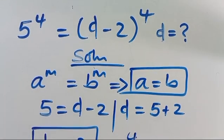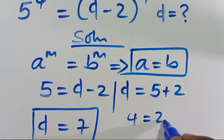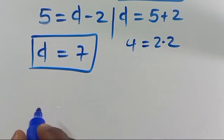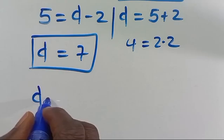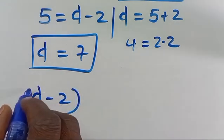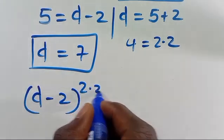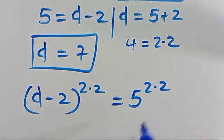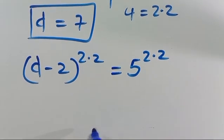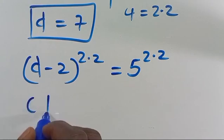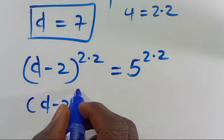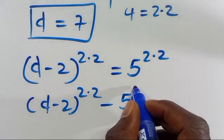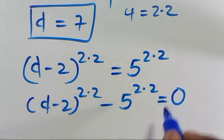From here, let's re-express this power 4 as 2 times 2. So we are going to have D minus 2 in parenthesis to the power of 2 times 2, then equals 5 to the power of 2 times 2, which gives us 4. Taking this rule, we have D minus 2 in parenthesis to the power of 2 times 2 minus 5 to the power of 2 times 2, and set this side to be equals 0.